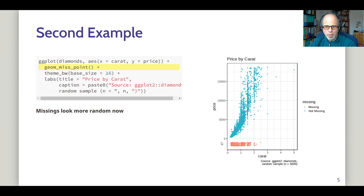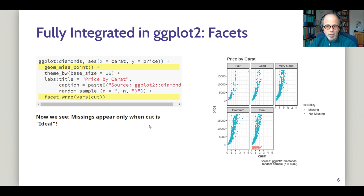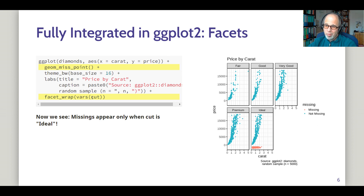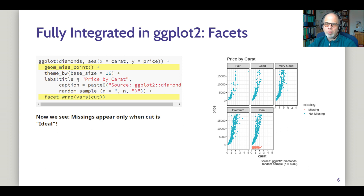Now to find patterns in the missing data here, I use the facet_wrap function. The same plot as before, but I added one line of code to split the plot into facets by the cut variable. And now again we see very quickly where the problematic missing values are — we see that missings appear only when the cut is ideal. So we get a very quick impression of that using ggplot2's built-in facet_wrap function in addition to the geom_miss_point function from the NANIAR package. Very little coding required to discover the pattern in missing values.